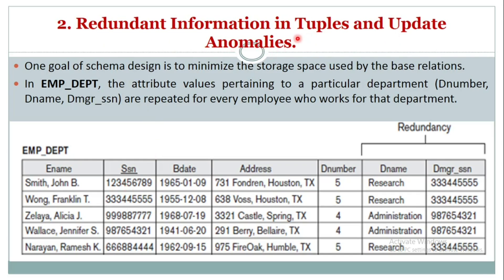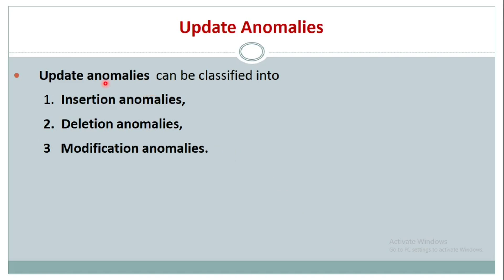Guideline 2 addresses redundant information in tuples and update anomalies. One goal of schema design is to minimize the storage space used by base relations. When we combine the attributes of the employee and department tables, this leads to redundancy — there are lots of duplicate values across rows, which is a wastage of space. Combining attributes of tables can also lead to update anomalies, which are classified into insertion anomalies, deletion anomalies, and modification anomalies.